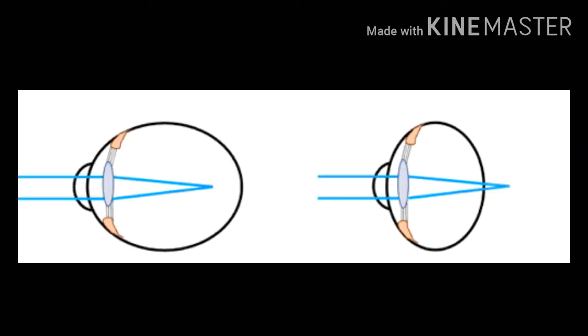As we can understand from the diagram, in the first image, the axial length is more than normal. Therefore, light is not properly focused on the retina — it will focus further ahead — and in this case a blurred image will form. Similarly, in the second image, the axial length is less than normal; therefore, the light focuses behind the retina, and again a blurred image results.